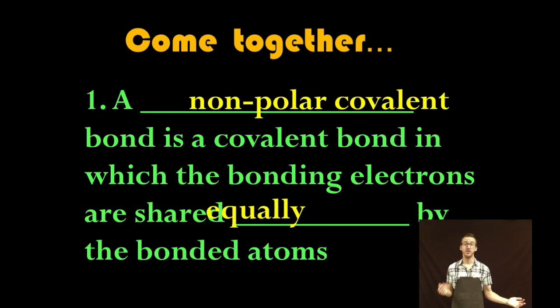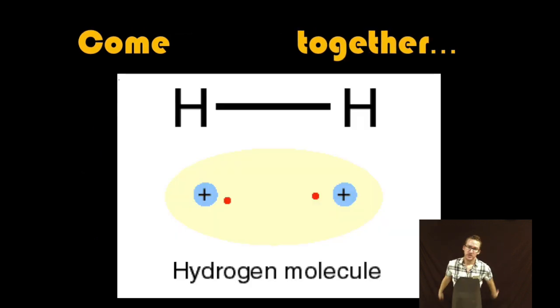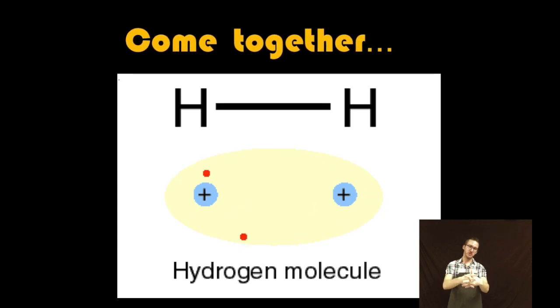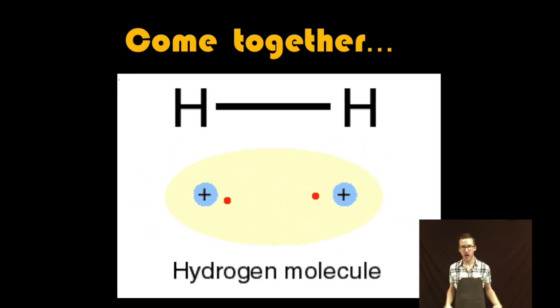Now let's start with nonpolar covalent bonds. This is a covalent bond in which the bonding electrons are shared equally by the bonded atoms. So take a look at the animation between two atoms of hydrogen. They are going to share the electrons equally because essentially they are going to have the same attraction for each of those electrons. They each have the same effective core charge. Neither one of those atoms is going to do a better job of attracting the electrons than the other. Nonpolar covalent.